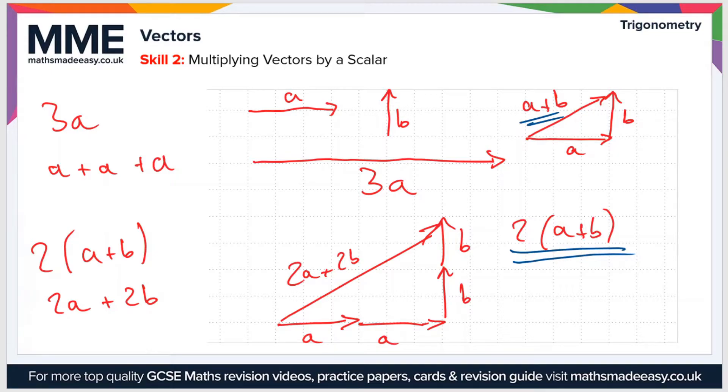So what does a scalar multiple mean? It means they have the same direction. In other words, this line here, the 2A plus 2B, is parallel to the A plus B line.